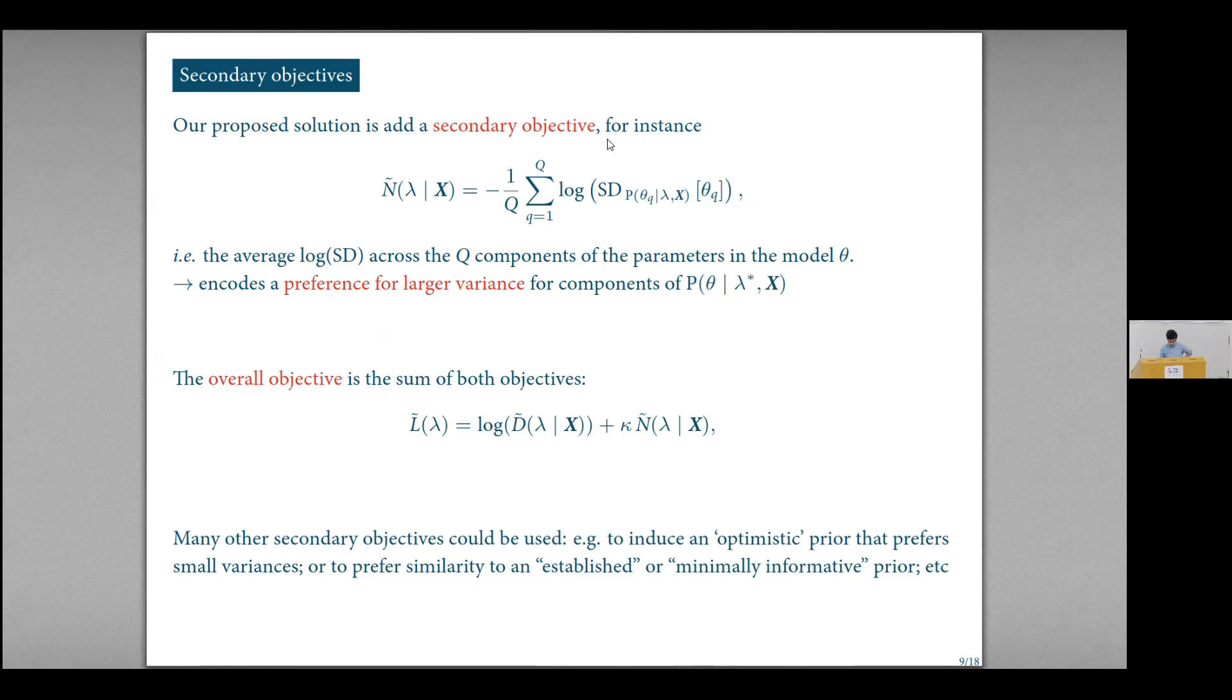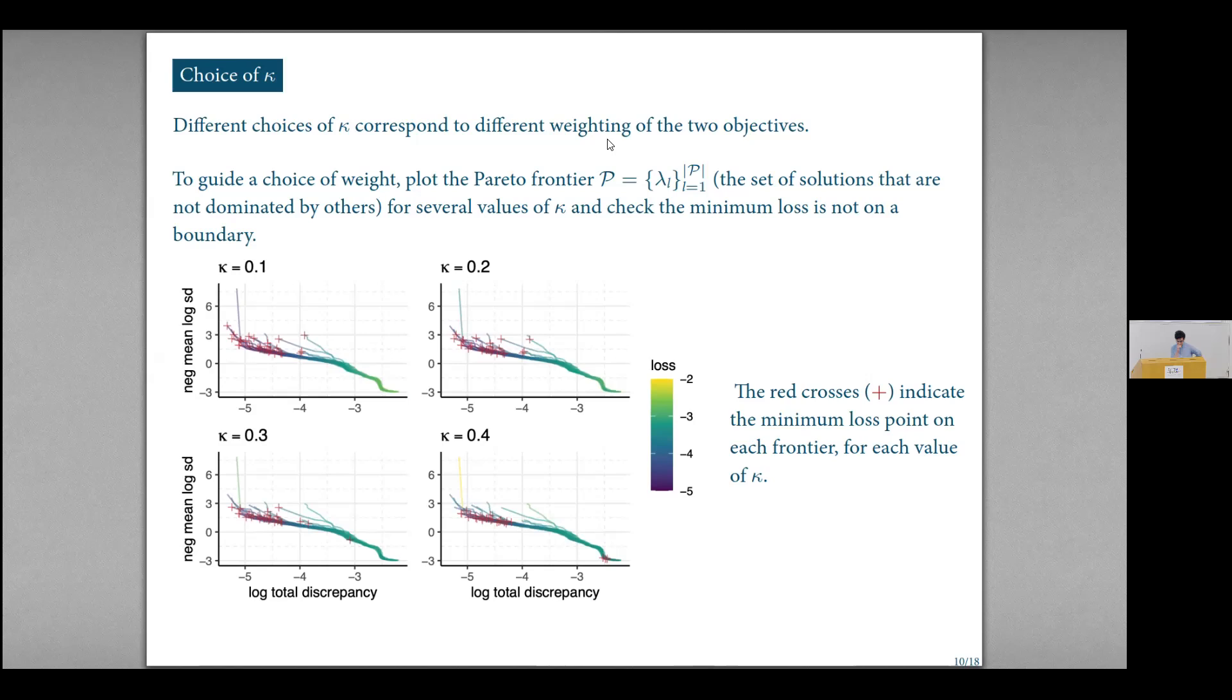So there's lots of other choices that you might make for what this secondary objective might be, but we didn't explore those because we didn't see what else you could do there. That quantity kappa obviously determines the relative weighting of these two objectives and possibly in some cases you might have some feeling for what you wanted that relative weighting to be. But often it's not entirely clear how you would want to do that. So what you can do is you can make a plot of the trade-off between these two objectives. So on the x-axis here we have the discrepancy objective, on the y-axis we have the secondary objective, and you can plot the relationship between these two and get the Pareto frontier, which is the set of solutions to that optimization problem that aren't dominated by any other solution. And so that might guide you in your choice of kappa.